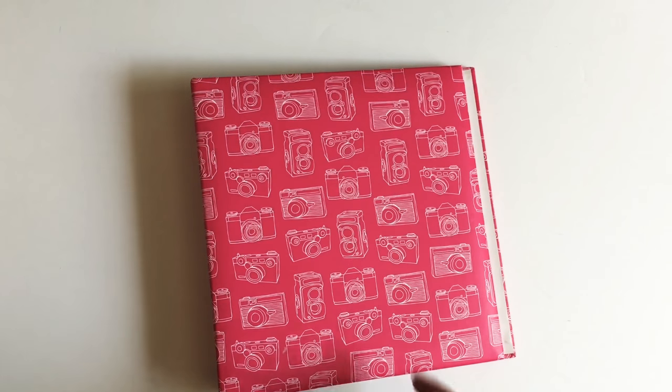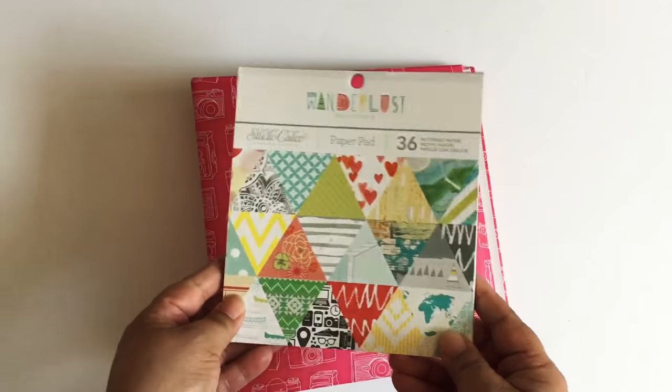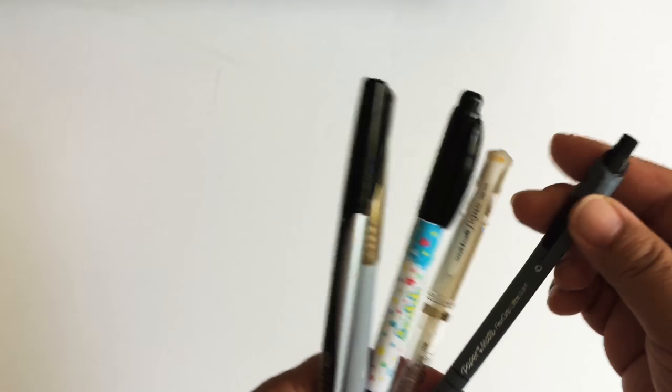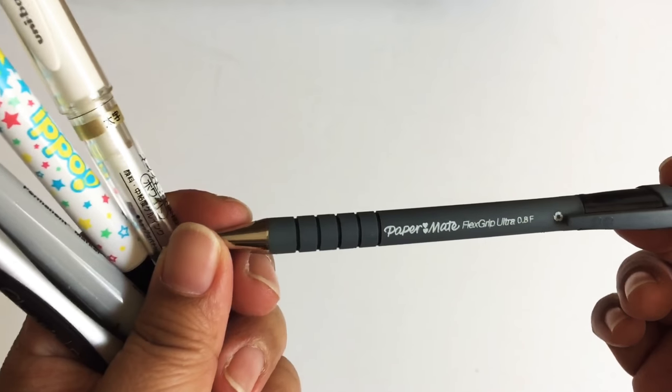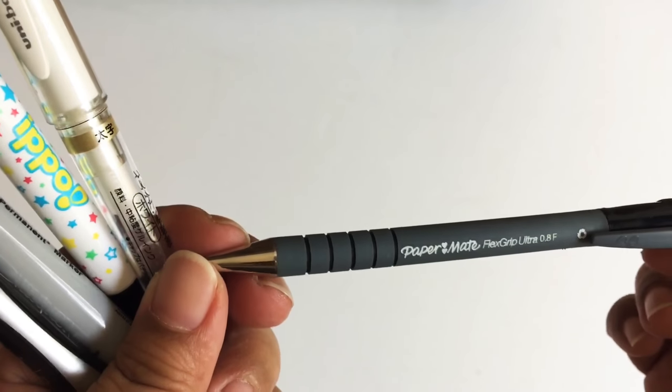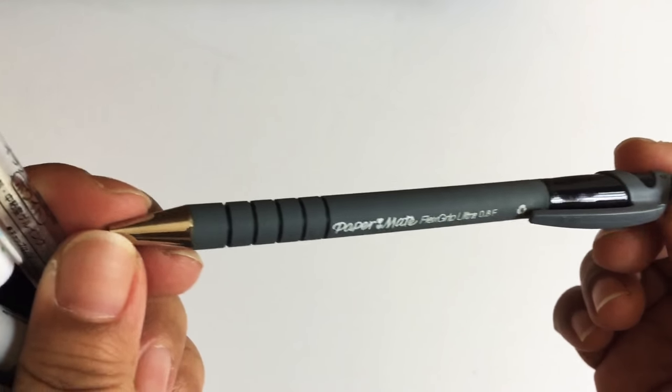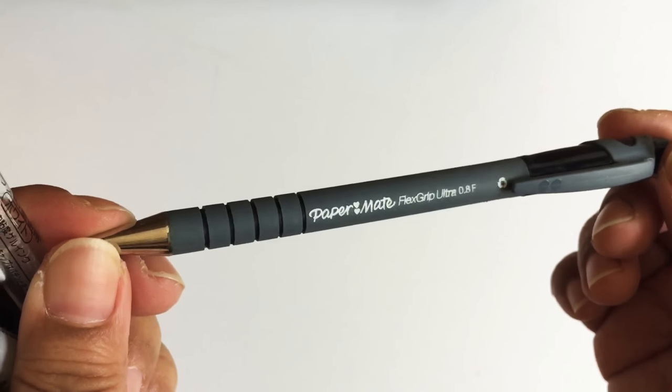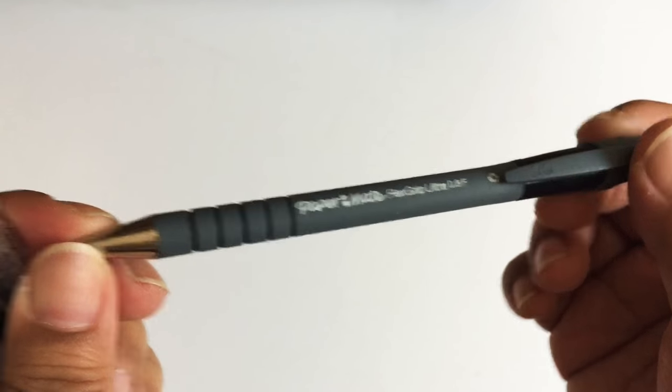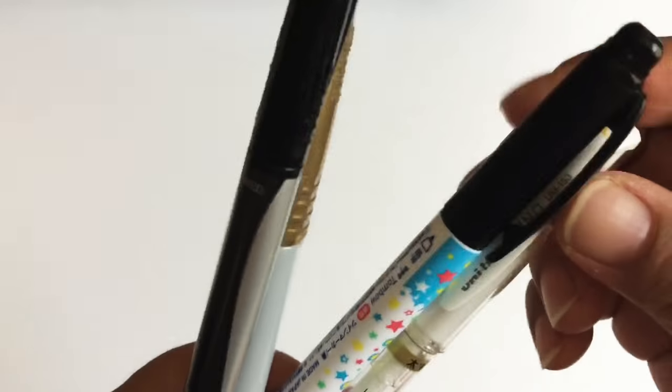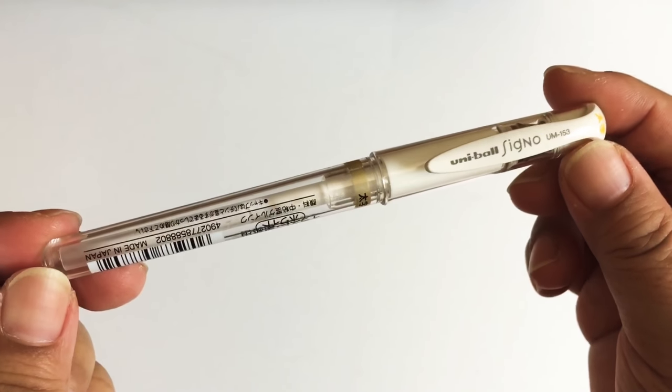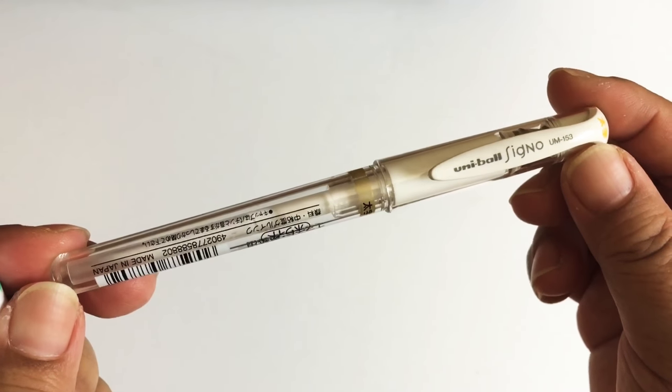I like to bring a variety of pens when we travel. Here we have a simple Papermate Flexgrip that you can find at Staples or Office Depot. This is my favorite pen to journal with because of the ultra fine point. I have the Uniball Signo in white. This one here is perfect if you've got inserts that have kraft or black paper.